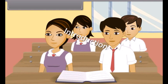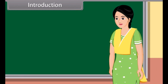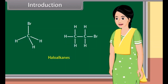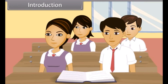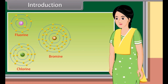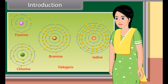Good morning, teacher. Good morning, students. Today we learn haloalkanes and haloarenes. Ma'am, what are haloalkanes? Haloalkanes are the chemical compounds in which one or more of the hydrogen atoms in an alkane have been replaced by a halogen atom. What are halogens? Halogens are the reactive non-metals having seven valence electrons.